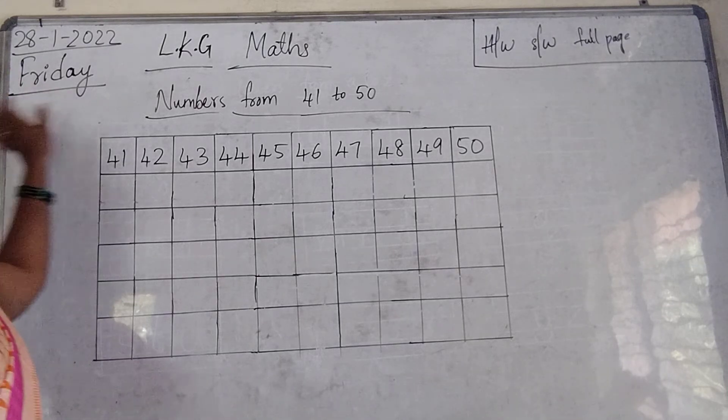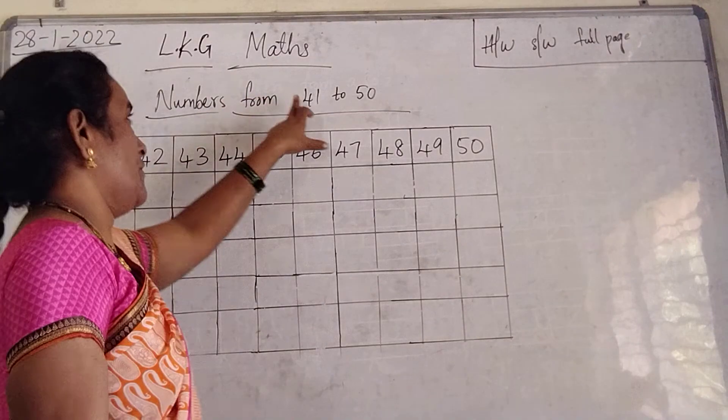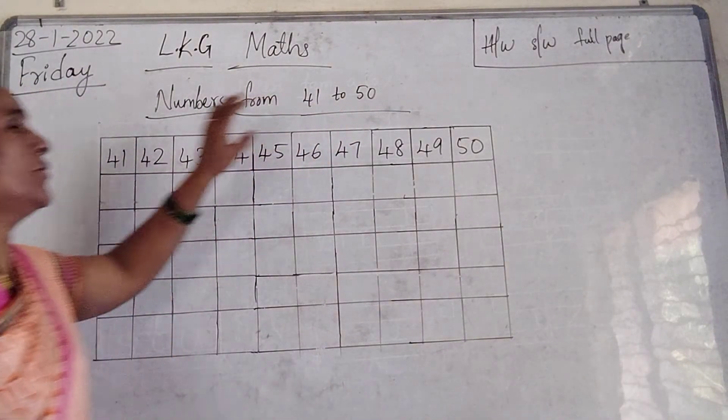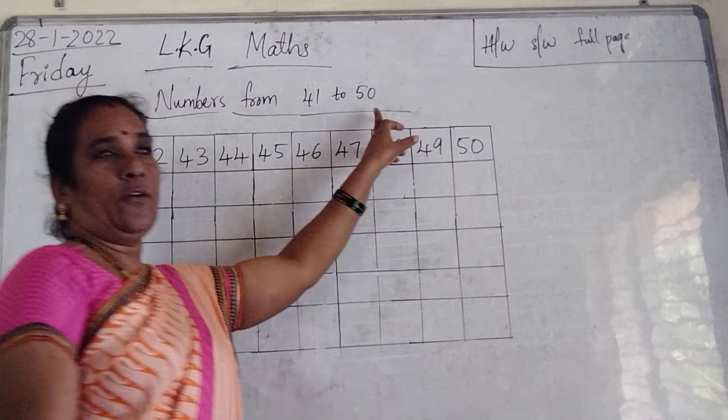In the previous class we learned numbers from 21 to 41. Today we are going to learn numbers from 41 to 50.